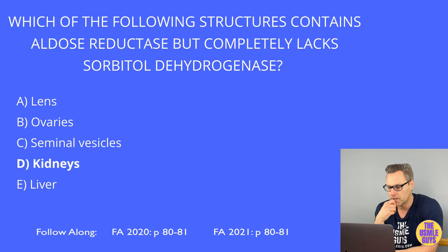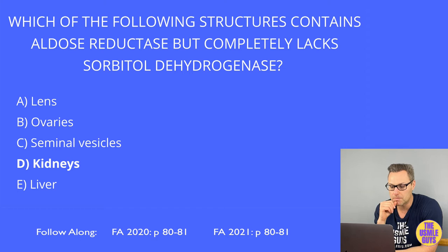Characteristics of classic galactosemia include failure to thrive, jaundice, hepatomegaly, intellectual disability, and infantile cataracts. An important association is the increased risk of E. coli-related sepsis in neonates. Treatment is by excluding both galactose and lactose from the diet.